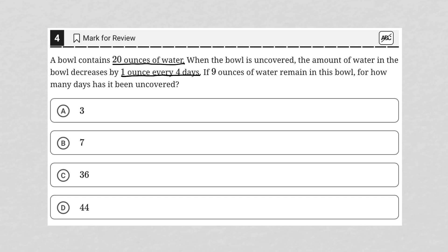Let me just make sure I understand that. So basically we're at 20 to start, but then we uncover the bowl and it loses one ounce per four days. So this is treating this question like a translate word problem, where we just want to make sure we understand all of the quantitative information provided.